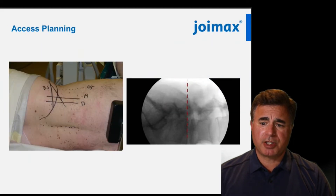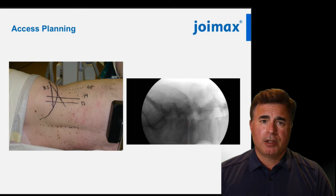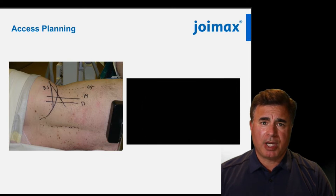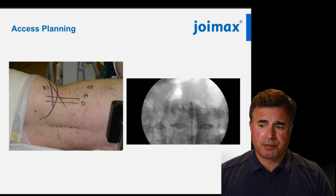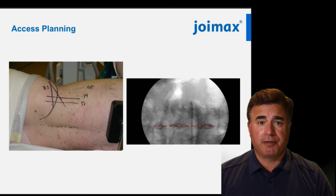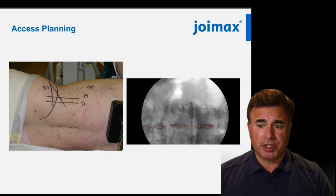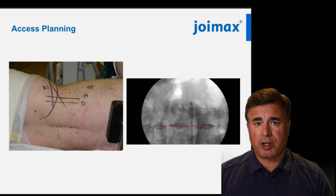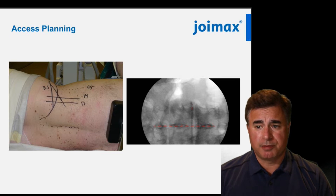When performing the procedure it's exceptionally important to have good imaging. You really need to line up the end plates in both the AP and lateral projections. You want to identify your midline and have it be in the midline of the vertebral body, because if it's rotated you may actually be more medial than your imaging leads you to believe. Just remember that small errors in the beginning can lead to large errors in the end.